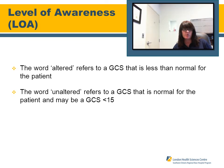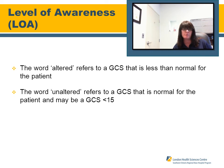Level of Awareness: the word 'altered' refers to a GCS that is less than normal for the patient. The word 'unaltered' refers to a GCS that is normal for the patient and may be a GCS of less than 15.